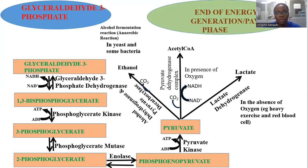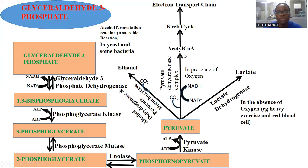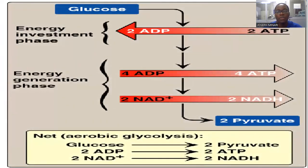This marks the end of the energy generation or payoff phase of glycolysis. However, it is not the end overall, because acetyl-CoA still needs to continue for more ATP production. From acetyl-CoA it moves to the Krebs cycle, which will be discussed in a subsequent video, and also the electron transport chain where the bulk of ATP is produced. At the end of glycolysis, the net production is two molecules of pyruvate, two molecules of ATP — four are generated but two were spent earlier — and two NADH.